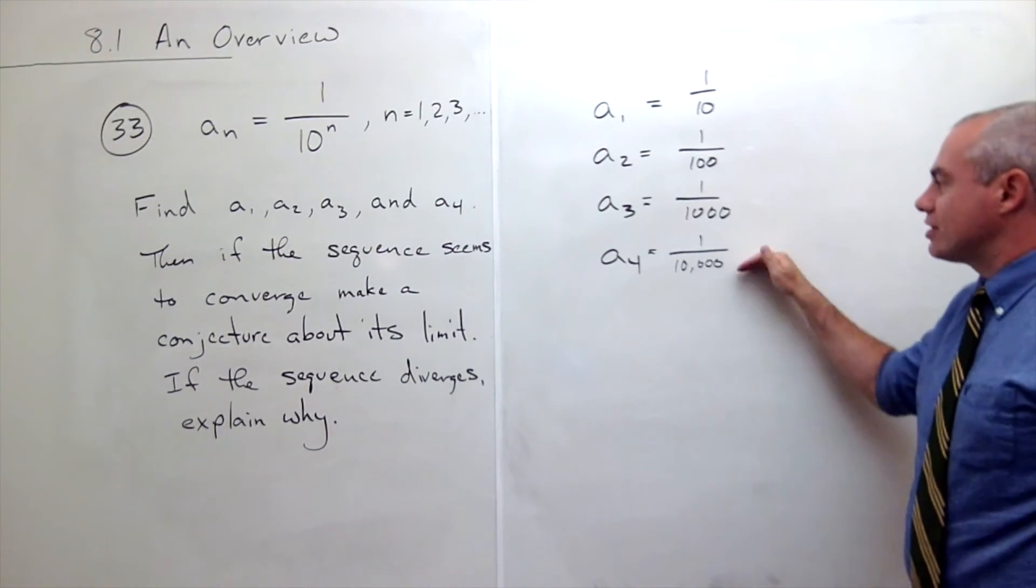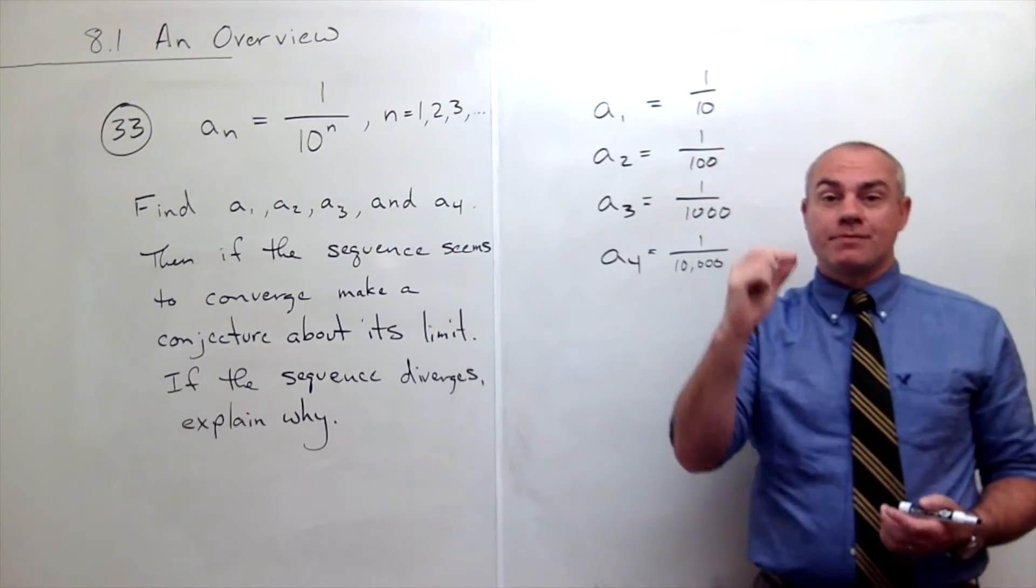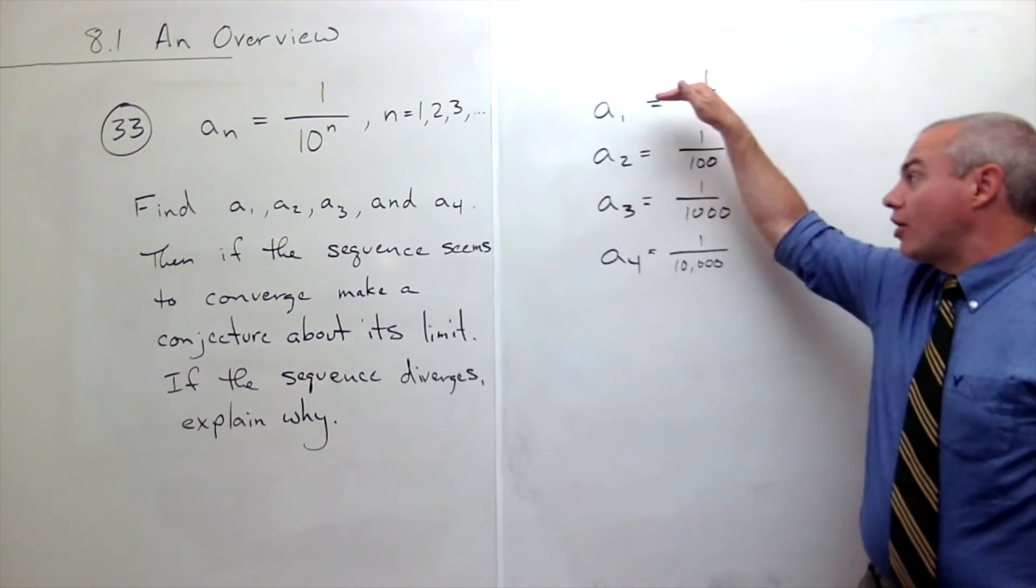1 tenth, 1 hundredth, 1 thousandth, 1 ten-thousandth. These things are getting very, very small. And as this number gets bigger and bigger, they get smaller and smaller. Where are they going?